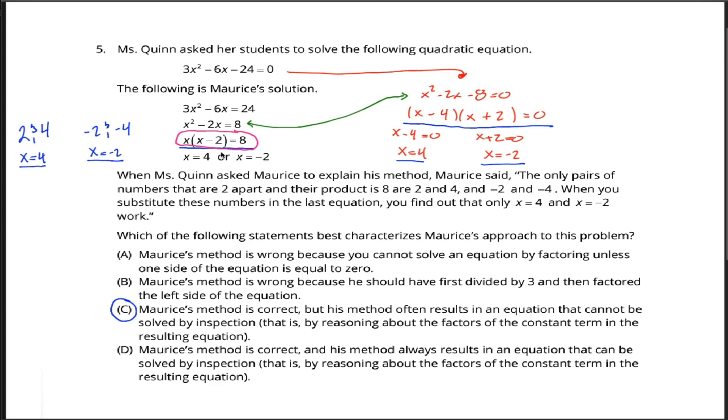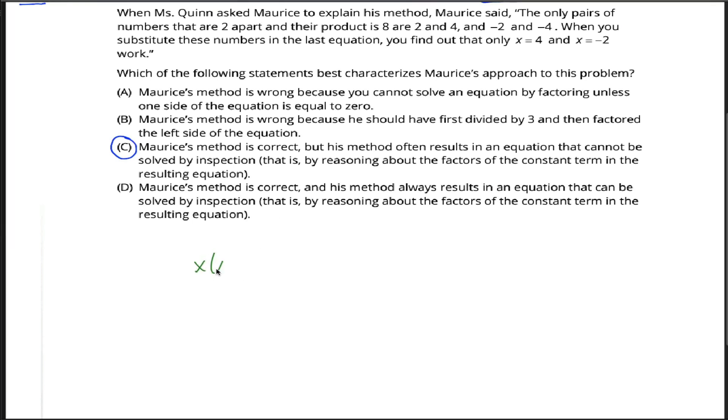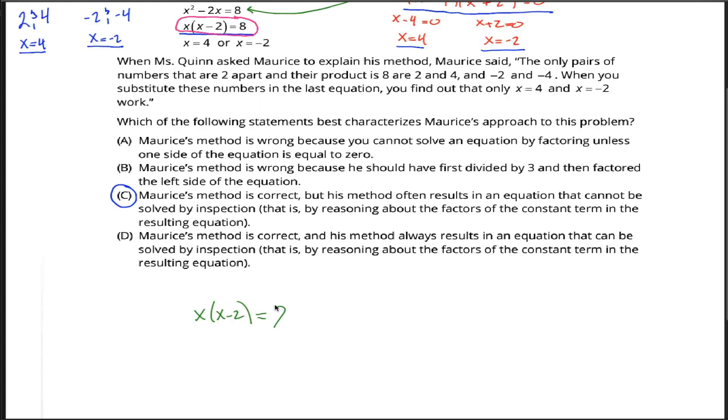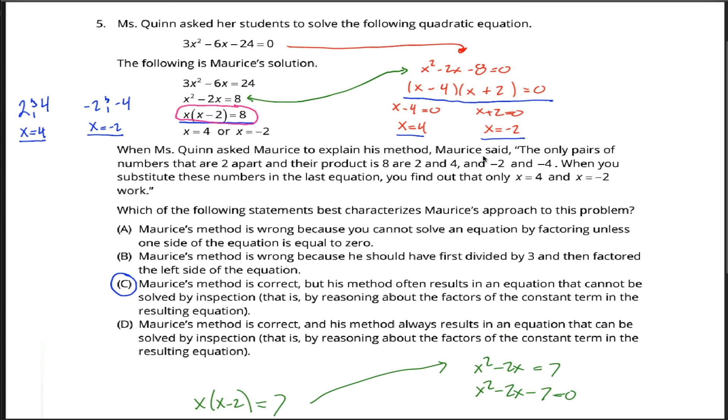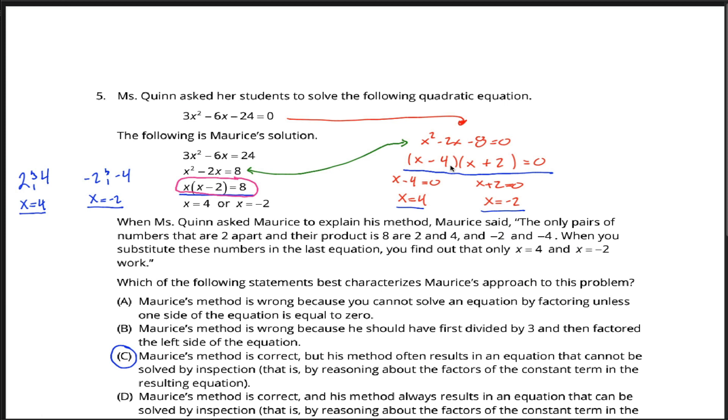You might argue that, yeah, in this case, both the numbers work, but what if instead of x times x minus 2 equals 8, it were, I don't know, x times x minus 2 equals 7. Then what would you do? Try to come up with two numbers so that when you multiply them together, you get 7, and so that the difference between those two numbers is just 2. You won't be able to do it, and I'd be like, right, but that would arise if I were trying to solve the equation x squared minus 2x equals 7. In other words, x squared minus 2x minus 7 equals 0, and if I started out with this equation right here, I wouldn't be able to solve it by factoring anyways. So I guess what I'm saying is, if you have a problem like this that can be solved by factoring, then Maurice's solution is every bit as good as the more standard factoring algorithm.